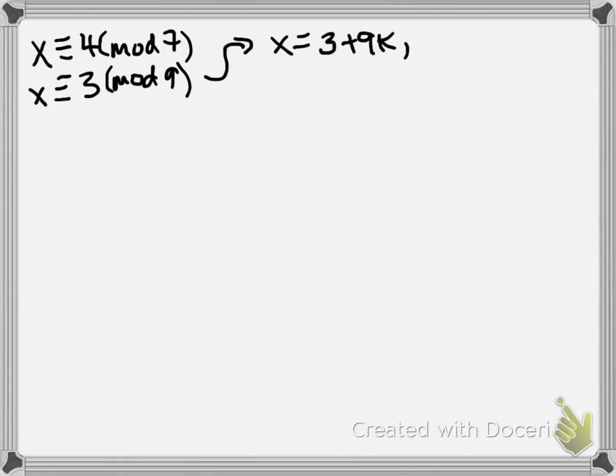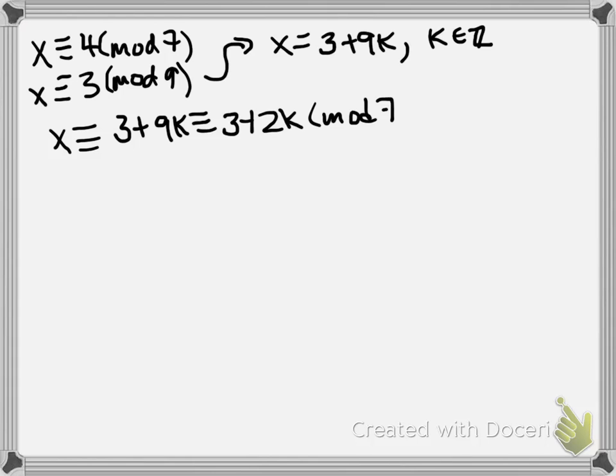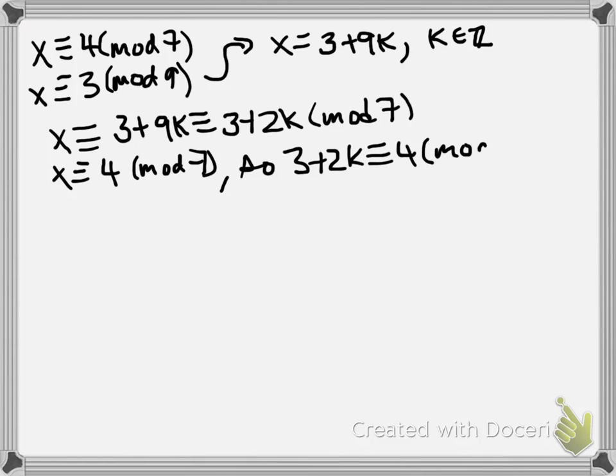What the second one means in equality of integers is that x is 3 plus 9k, where k is some integer. Now let's take that and reduce it mod 7. That says that x is congruent to 3 plus 2k mod 7, but we also know that x is congruent to 4 mod 7.